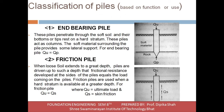Now we will look at each type in detail. End bearing piles: these piles penetrate through the soil and their bottom or tip rests on a hard stratum; these piles act as a column. The soft material surrounding the pile provides some lateral support for the end bearing pile. The equation for this pile is: q_u = q_p, where q_u is the ultimate load and q_p is the load from the lower strata.